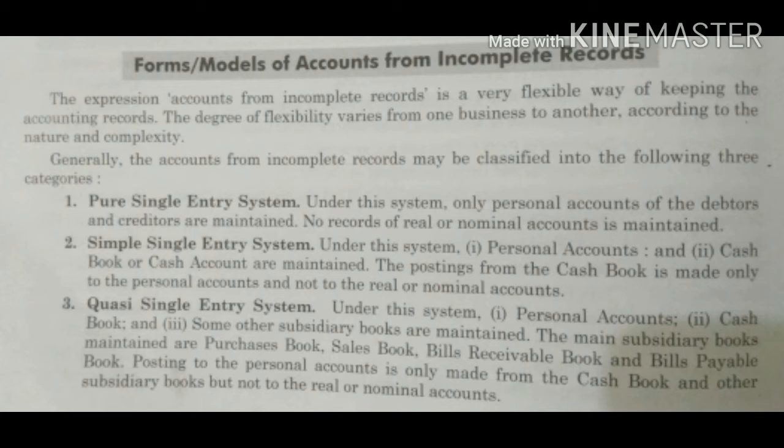Third is quasi single entry system। Under this system personal accounts, cash book, and some subsidiary books are maintained — like purchase book, sales book, bills receivable, bills payable। Posting to the personal account is made only from the cash book and other subsidiary books, but not to the real or nominal account। Quasi में हम personal account, cash book के साथ कुछ subsidiary books भी बनाते हैं। But इसमें भी सिर्फ वही transactions record करते हैं जो cash books से extract की जा सकती हैं। So these are the three forms: pure, simple, and quasi single entry system।